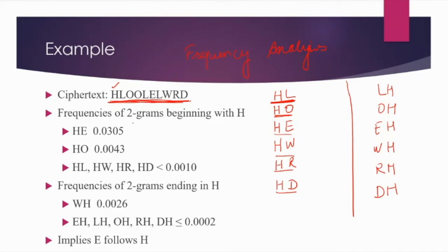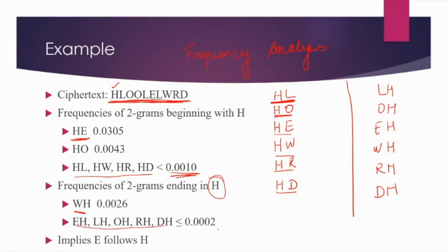Now, find out in what possible way you can rearrange to get the highest frequency two-gram. The probability of H followed by E is 0.0305, and of HO is lower; the rest are less than 0.0010. For two-grams ending in H, WH has frequency 0.0026, while all others are less than 0.0002. So we choose the two-gram with the highest frequency — in this data, H followed by E has the highest frequency.